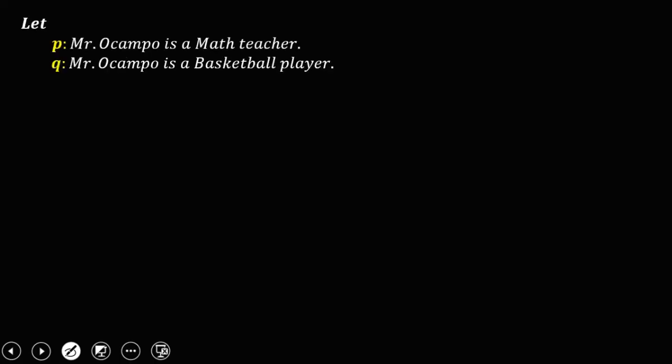So let's have this given. We let P: Mr. Ocampo is a math teacher, and Q: Mr. Ocampo is a basketball player. Then we have this equation — create a compound proposition or compound statement using the given symbol or given equation.